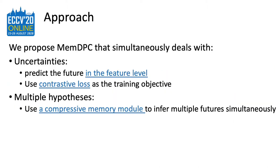We propose memory-augmented DPC that simultaneously deals with uncertainties and multiple hypotheses. To deal with uncertainties, our model predicts the future at the feature level to only encode the high-level semantics, and we also use contrastive loss as a training objective to avoid an over-strict constraint. To deal with multiple hypotheses, we propose a compressive memory module which is able to consider multiple features simultaneously.